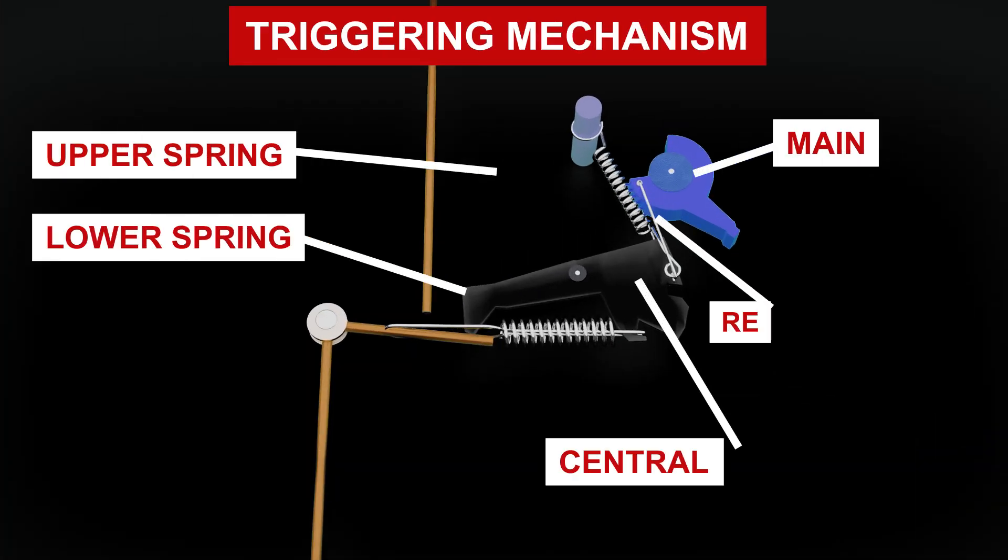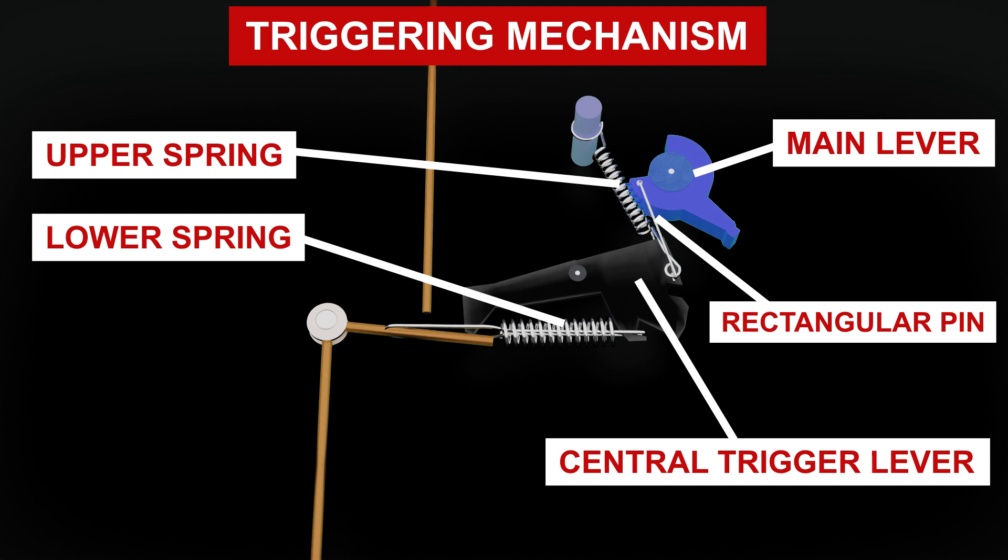There is a central trigger lever. A main lever is connected to it by a rectangular pin, and two springs are similarly connected to the main trigger lever. Now let's see an interesting physics mechanism.